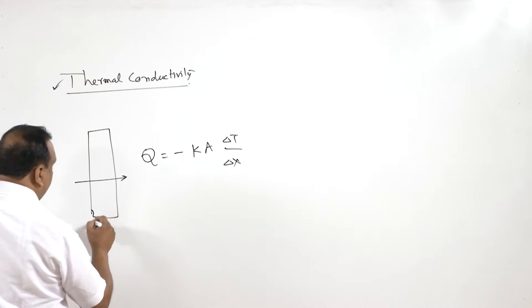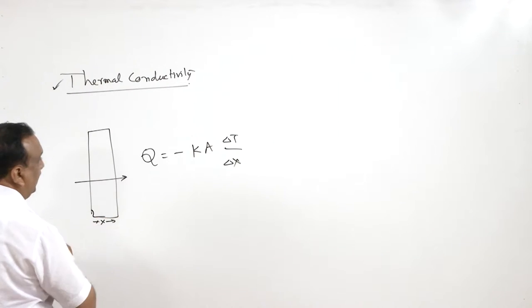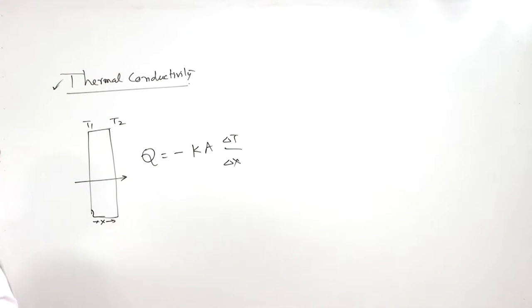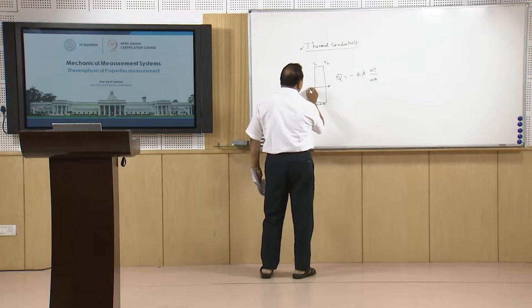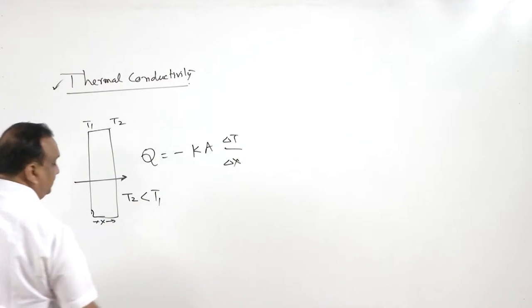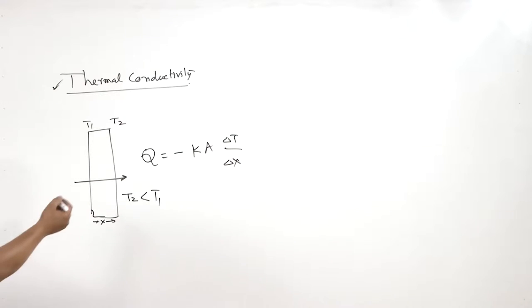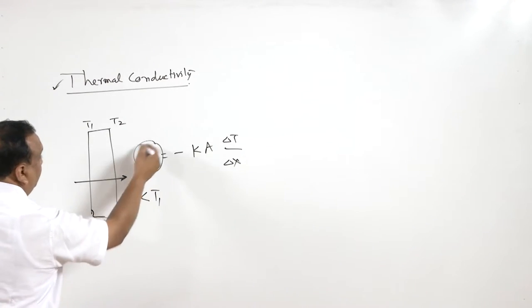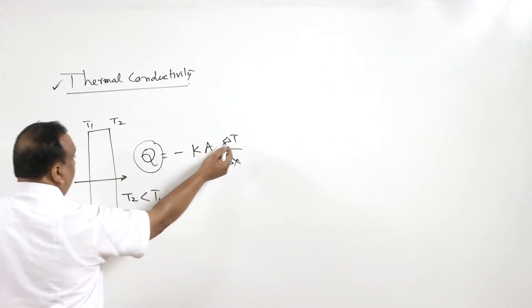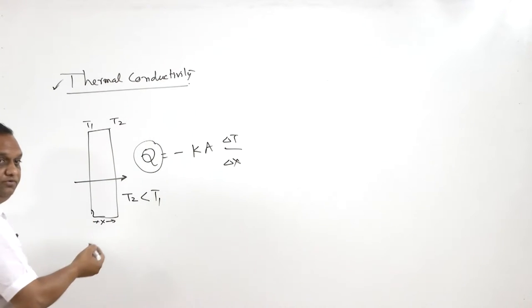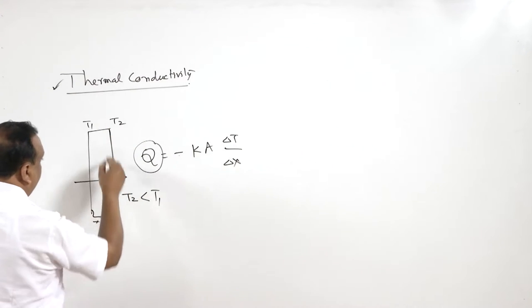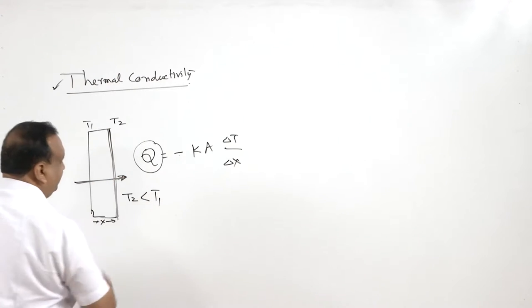Here x is the thickness of the slab and ΔT is the temperature difference T2 − T1. Since heat transmission takes place from high to low temperature, T2 is always less than T1, making ΔT negative — and the double negative cancels out. A is the cross-section area through which the heat transmission takes place.